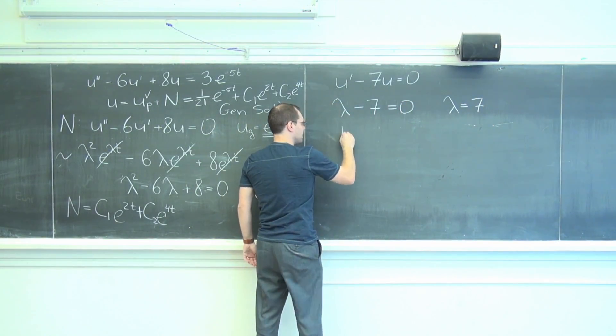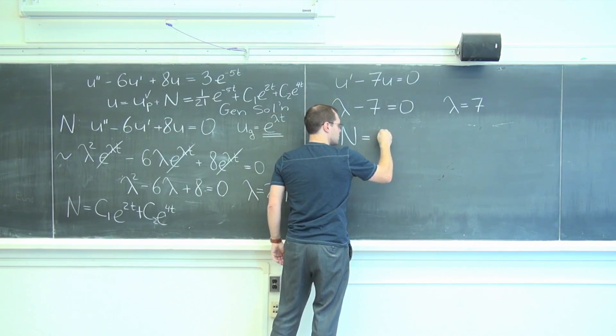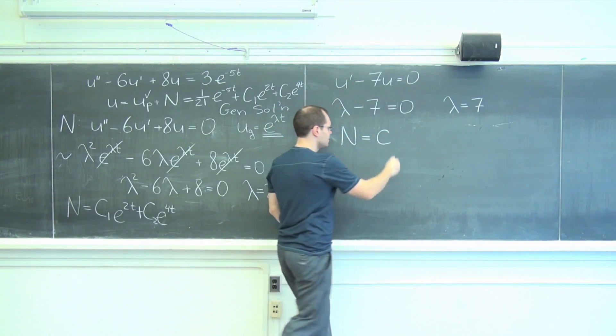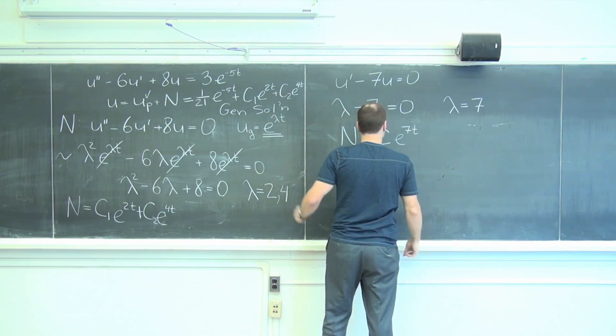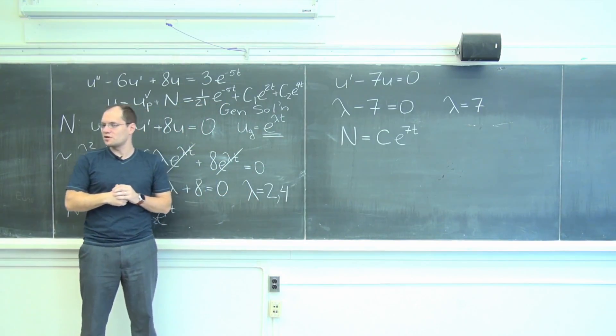So our null space is any constant times e to the 7t, just like it was here. So the same logic works.